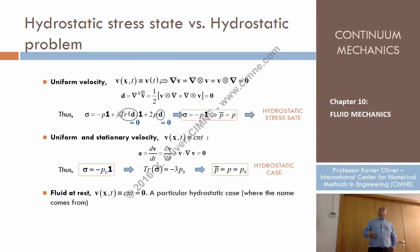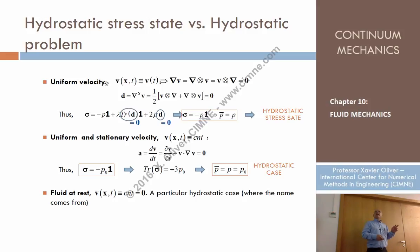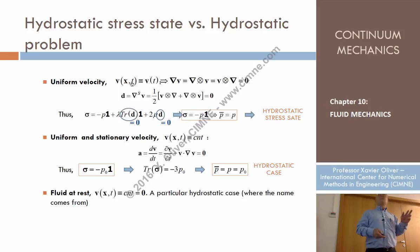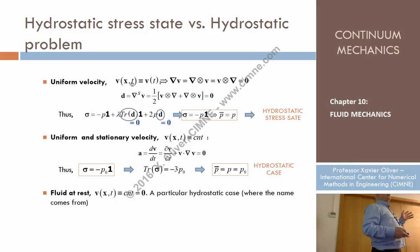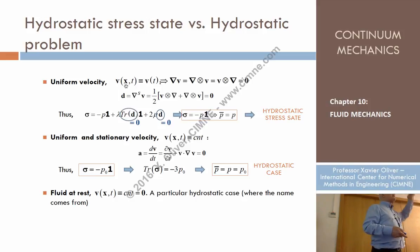Let's consider the general case in which we have a spatial distribution of velocities over time — the spatial description of velocity. We consider specific cases: when the velocity doesn't depend on time, we say the velocity is stationary or in steady state. When the velocity doesn't depend on the spatial coordinates, we call that uniform in spatial descriptions, or homogeneous in material descriptions.